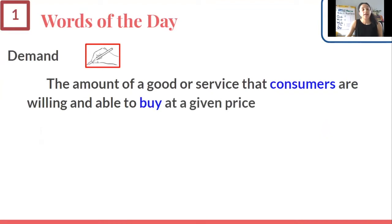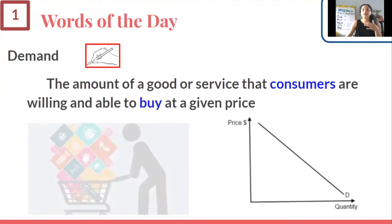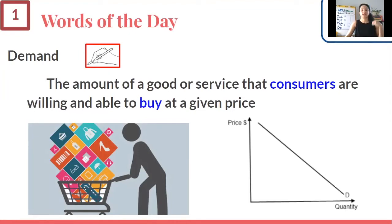Now let's do demand. Demand is the amount of a good or service that consumers are willing and able to buy at a given price. On a chart, demand is usually a negative or downward slope, and it's usually marked with a D for demand. On this side, we're thinking about the consumer — not the apple farmer, but you and me with a shopping cart, buying things, whether online or in a grocery store.